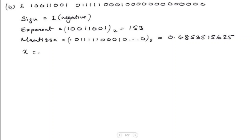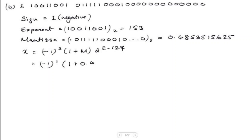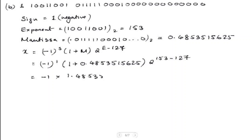The value for X is (-1)^S × (1 + mantissa) × 2^(exponent − bias), where the bias is 127. So we have (-1)^1 — since the sign bit is 1 — times (1 + 0.4853515625) times 2^(153 − 127). That gives us −1 × 1.4853515625 × 2^26.